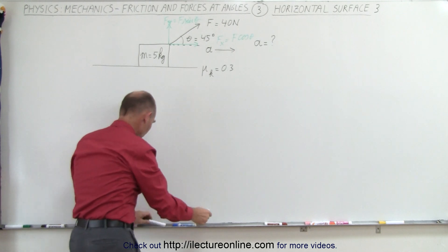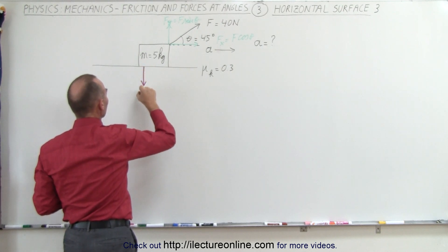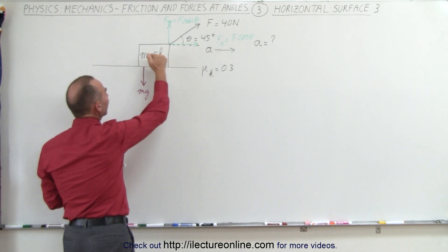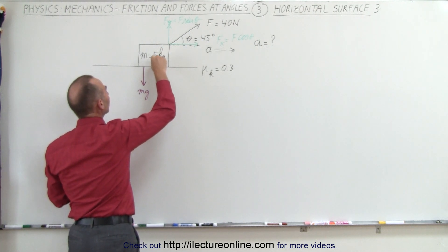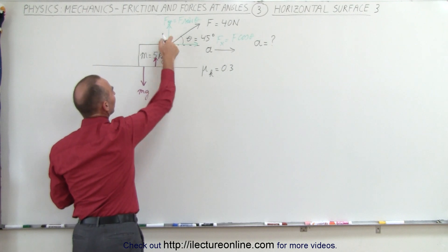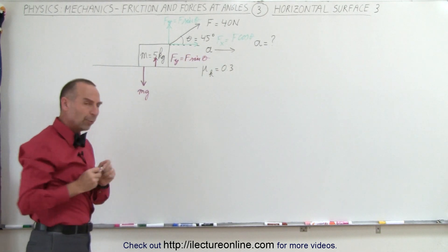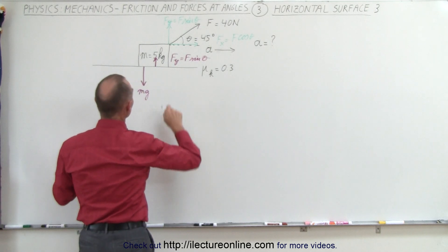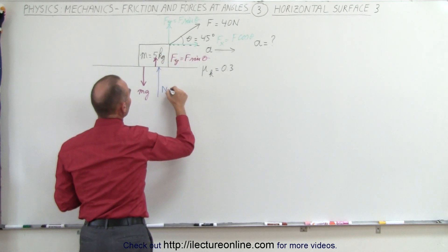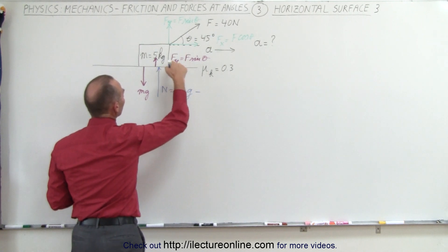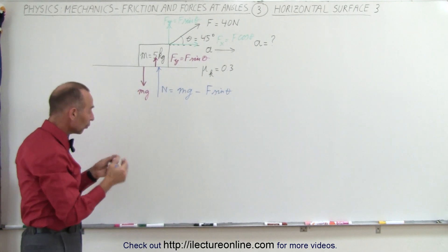Let's also look at the forces between the block and the floor. We have the force of gravity pulling down, which is m times g. But the weight is going to be lessened by the vertical component — the block gets pulled up a little, so the force relative to the ground caused by this is F times sine of theta. The normal force pushing back is therefore equal to mg minus F times sine of theta, which means the friction force on the block is also going to be less.